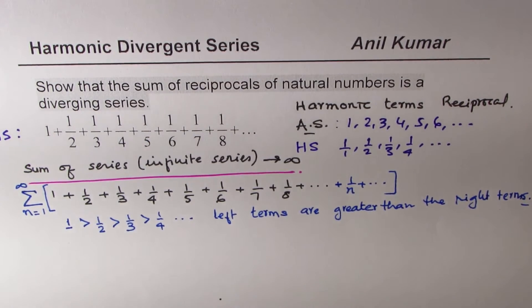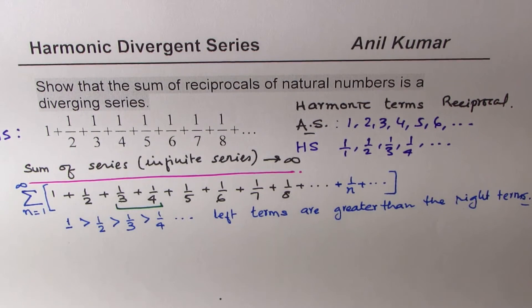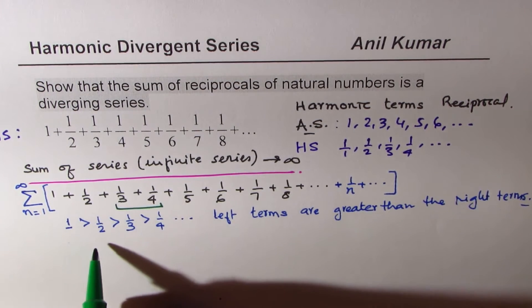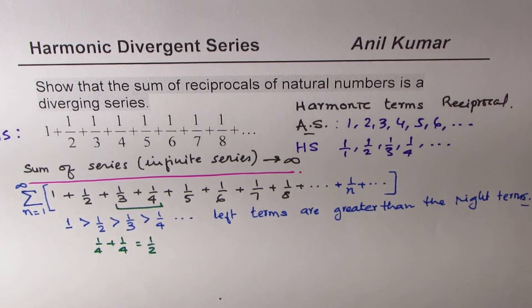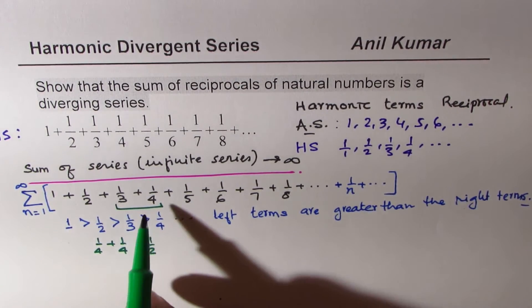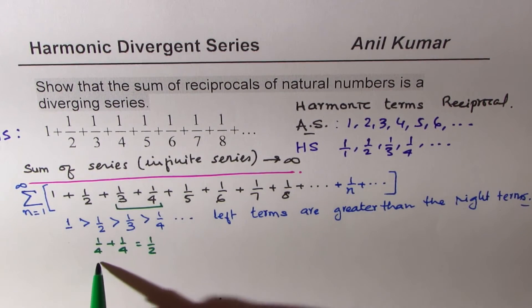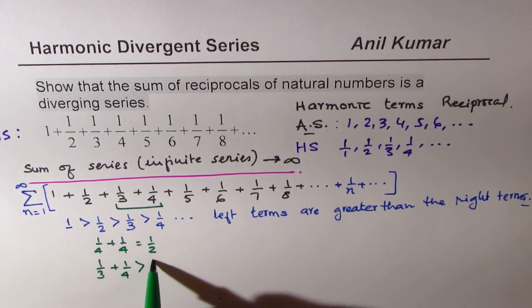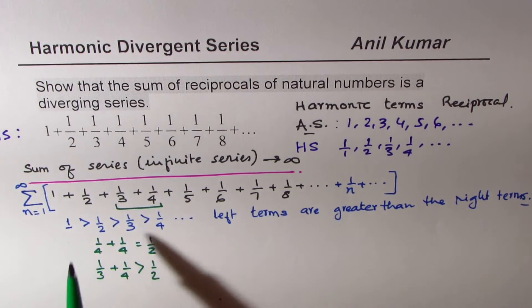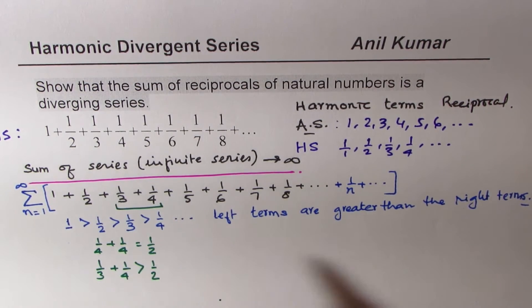That brings us to something very important. If I consider these two numbers — one over three and one over four — we know that one over four plus one over four equals half. Since one over three is greater than one over four, that means one over three plus one over four should be greater than half. So combining these two terms gives something greater than half.